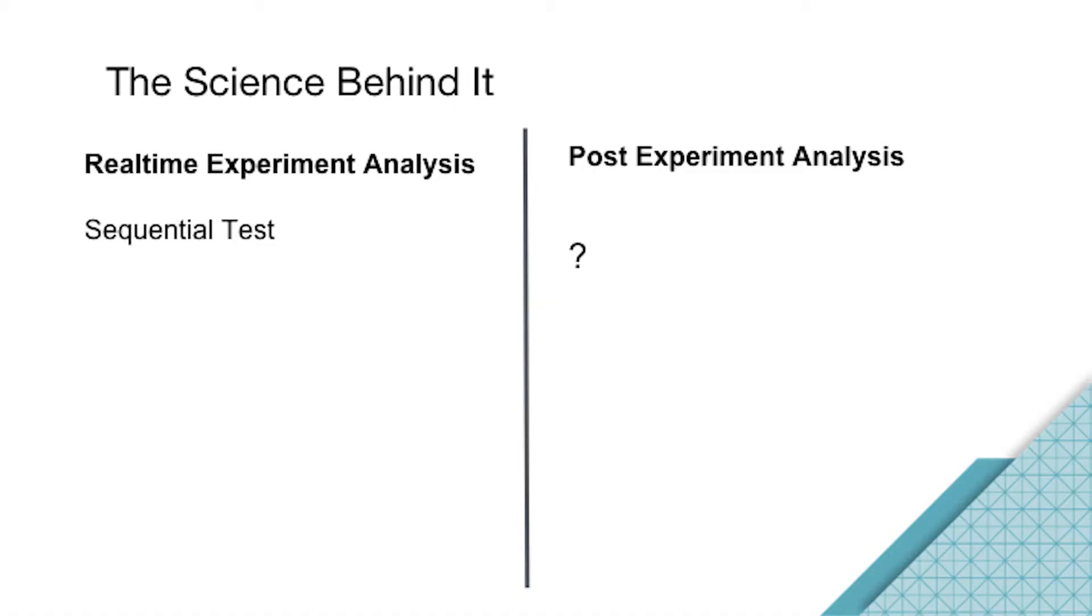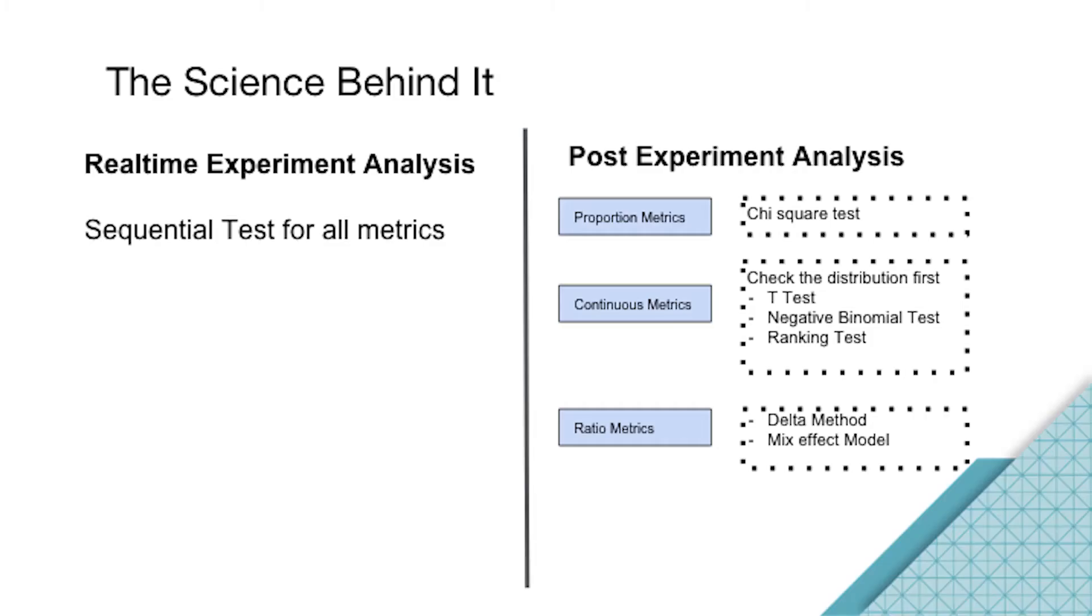I'm a data scientist, so I want to talk about the science behind this. In our old tool we only do real-time experiment analysis, so we use sequential tests. Right now we also do post-experiment analysis. We classify the metrics into three categories: proportion metrics, continuous metrics, and ratio metrics.